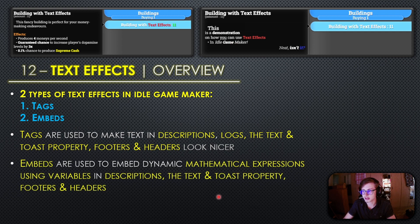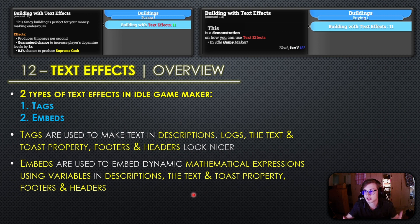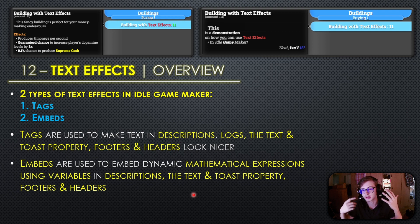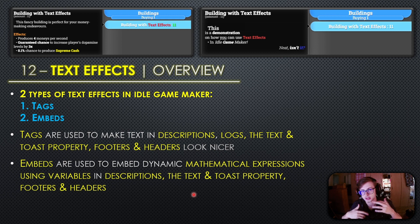The second type of text effects, embeds, allow you to embed dynamic mathematical expressions using variables in descriptions, the text and toast property, as well as footers and headers. Embeds are insanely useful because with them you can create dynamic text that updates in real time based on in-game variables. Imagine having health points or in-game currency displayed directly in your descriptions — with embeds it's possible.